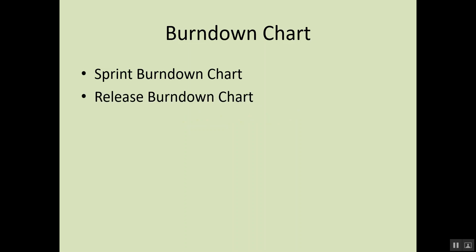Then we cover how the Scrum Master provides services to the Product Owner — how the Scrum Master coaches the PO and effective collaboration techniques the PO can use with the Scrum team. Then how the Scrum Master provides services to the organization to remove impediments, and how the Scrum Master can coach the organization. We also cover burndown charts: how to create one, who owns the sprint burndown chart, and who creates the release burndown chart.